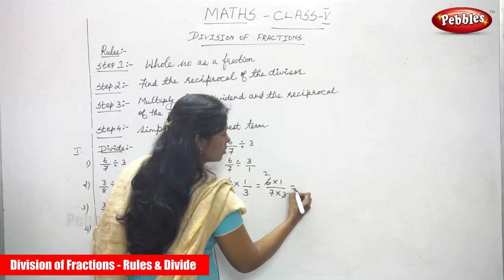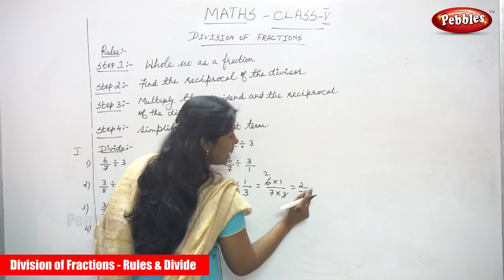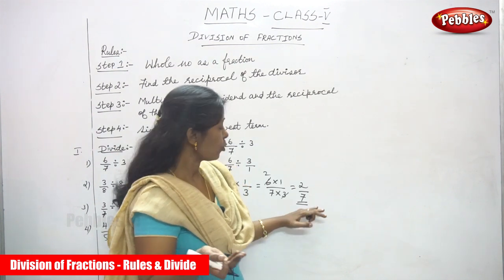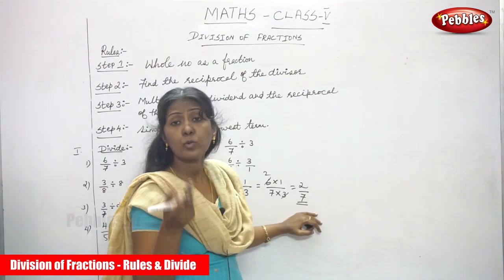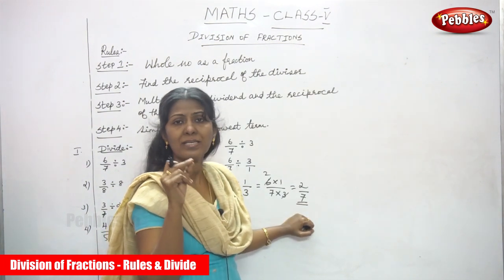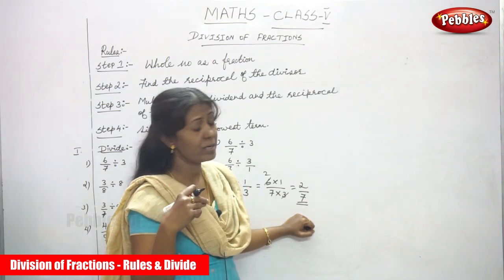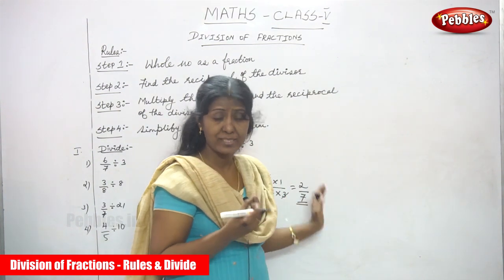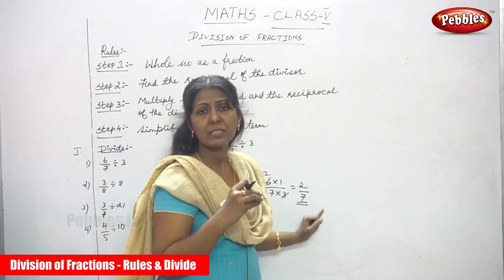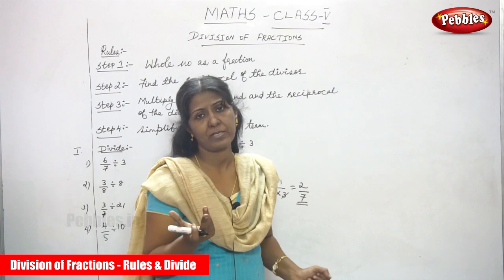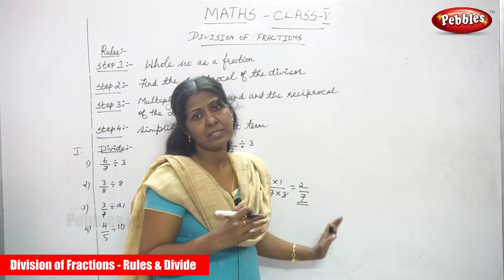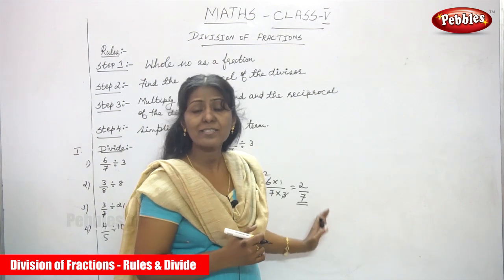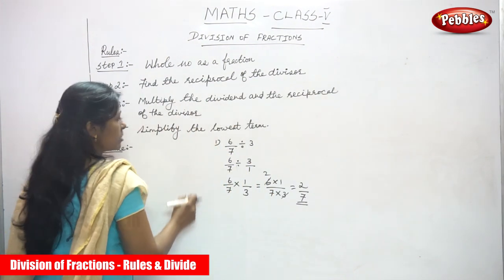I cross-cancel: 3 goes into 6 twice and into 3 once, giving 2 × 1 over 7, which is 2/7. The final step says make the answer as a lowest term. Here 2 and 7 share no common divisor — 2 is even and 7 is odd — so you cannot simplify further. The answer is 2/7.